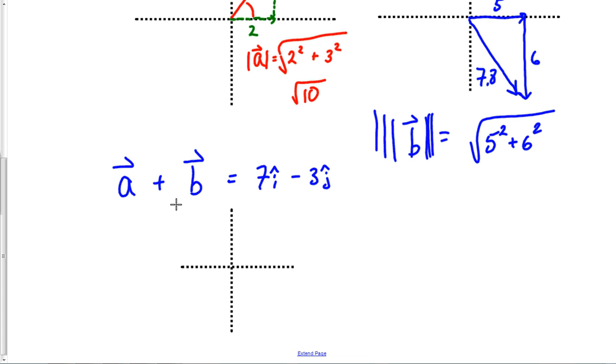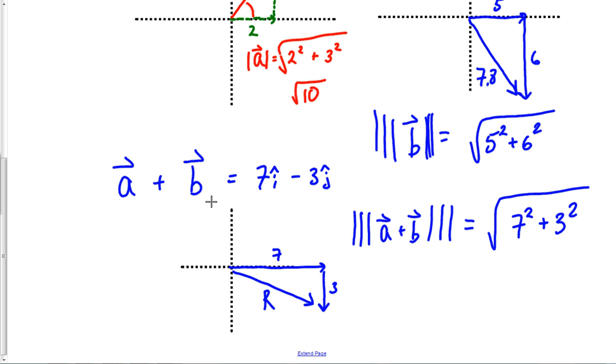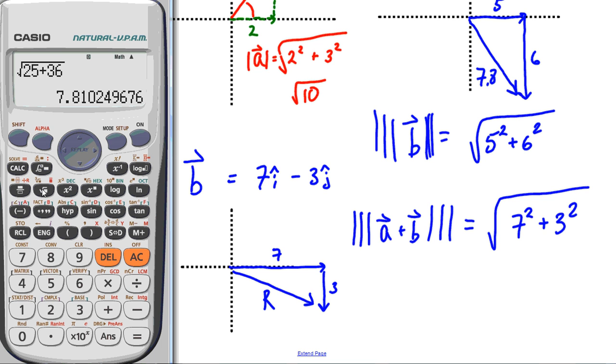What does this mean? It means if I added a and b, it would combine to make a vector that went over 7 in the x and down 3 in the y, and then my resultant would be there. If I was asked to find the magnitude of a plus b, it's simple: 7 squared plus 3 squared, square root. Radical of 49 plus 9 equals radical 58, which is 7.6.